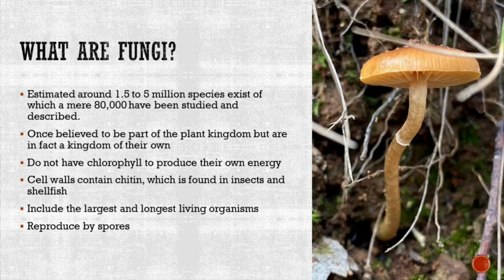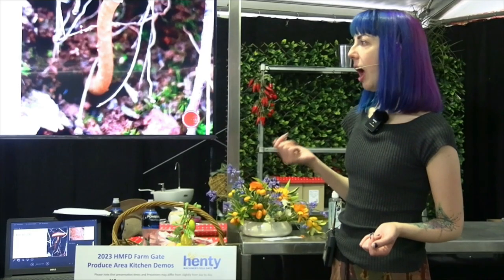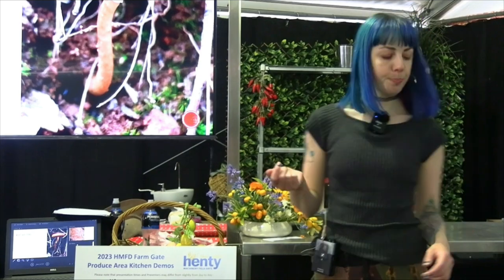They differentiate from plants in the sense that they do not have chlorophyll to produce their own energy. Their cell walls contain chitin, which is found in insects and shellfish — so when you consider that, they're actually more closely related to animals than plants. They include the largest and longest living organisms, and they reproduce by spores.